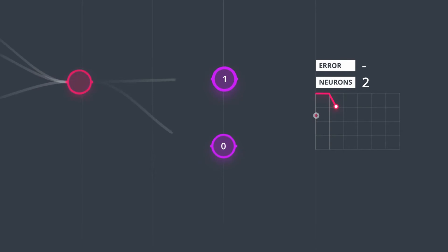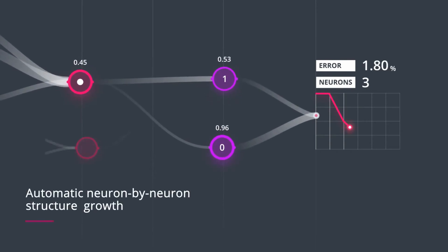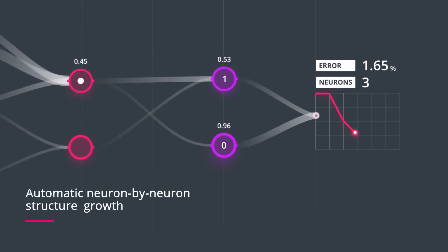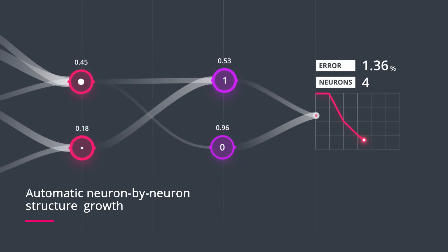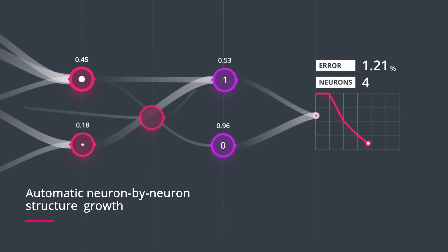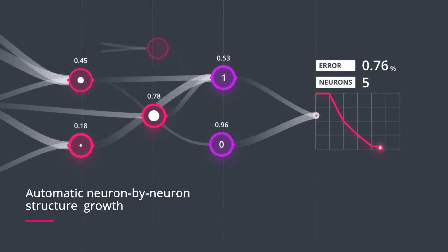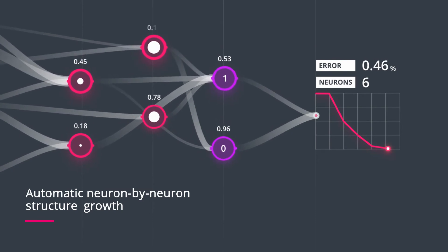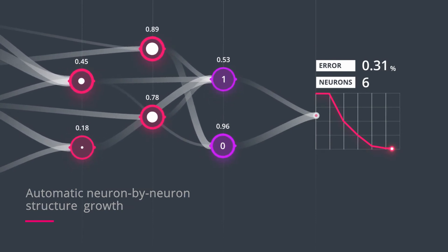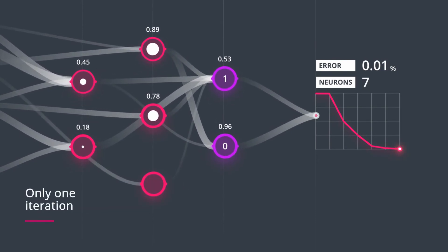The Newton platform enables models to be built automatically, neuron by neuron, starting from learning general features and moving toward identifying the most specific ones. This allows selection of a model of almost any level of precision and size in a single iteration.